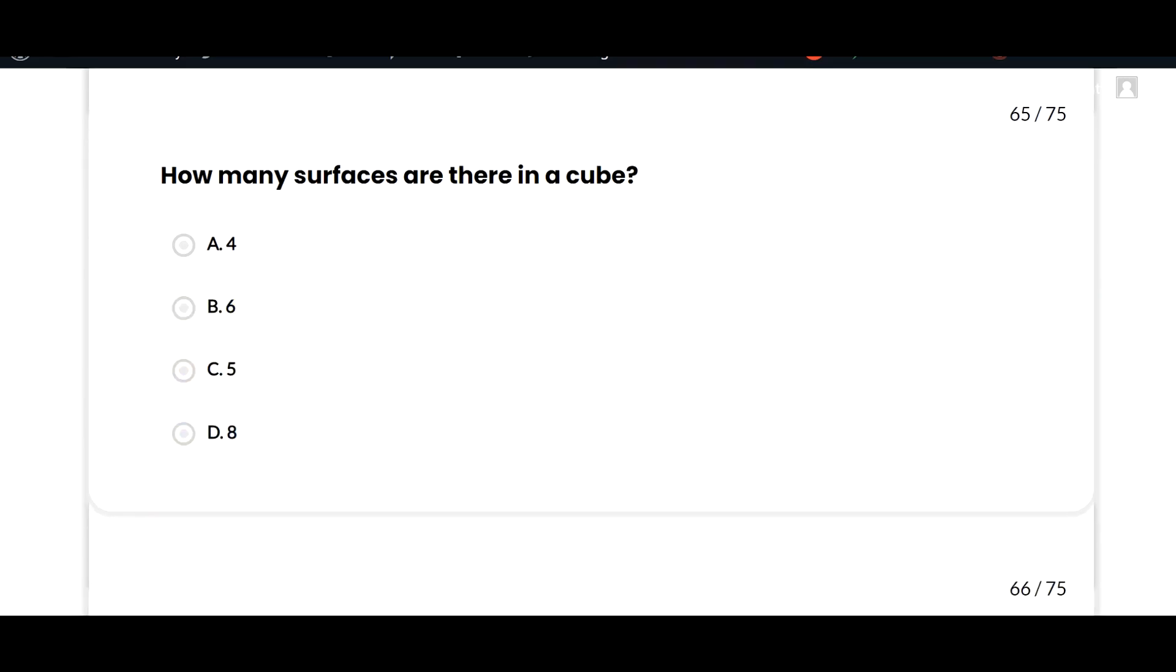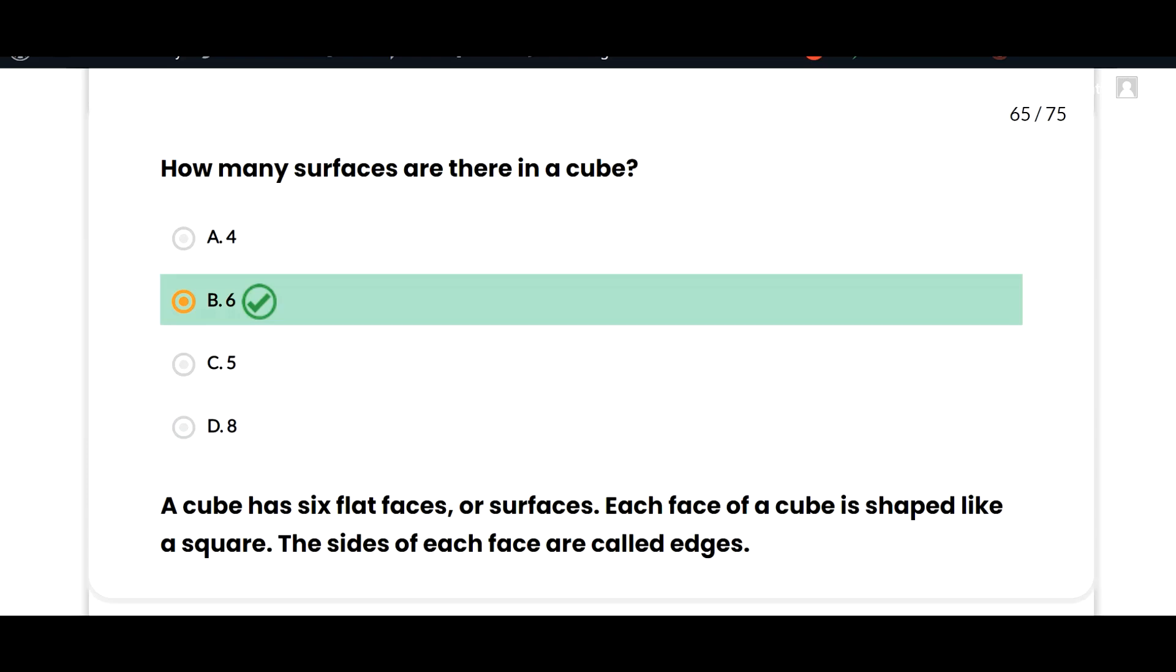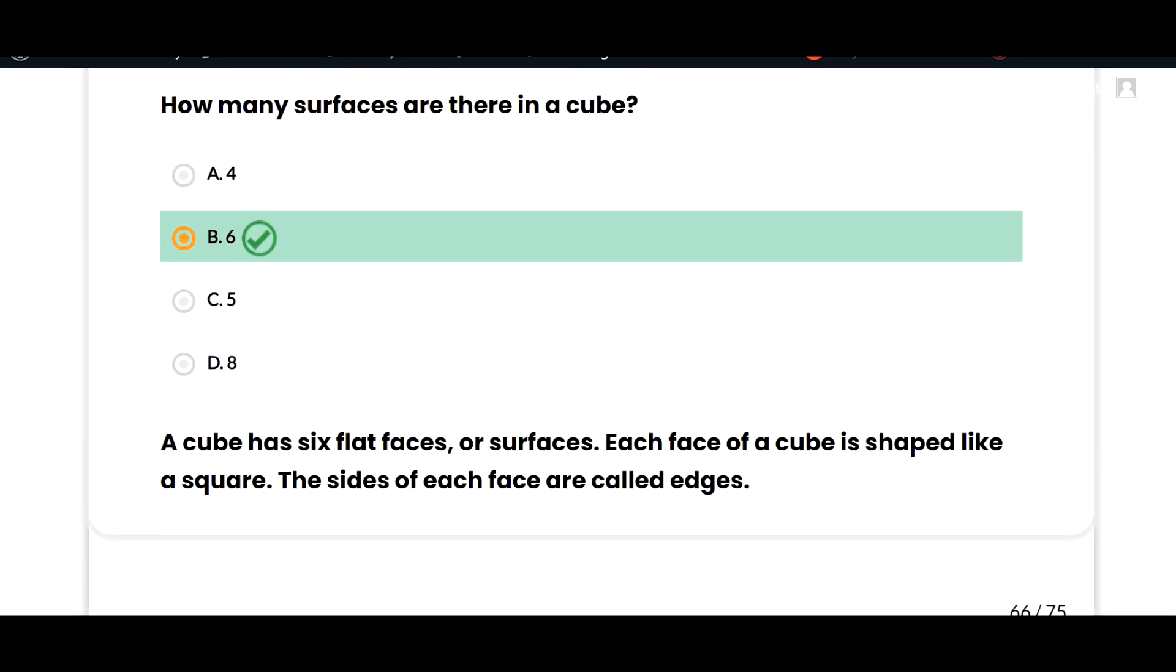How many surfaces are there in a cube? Six, option B is correct, because a cube has six flat faces or surfaces. Each face of a cube is shaped like a square. The sides of each face are called edges.